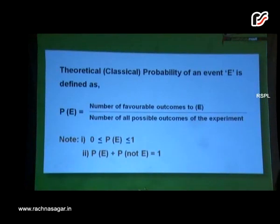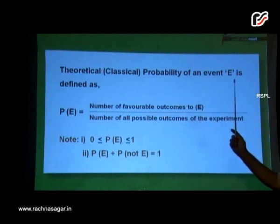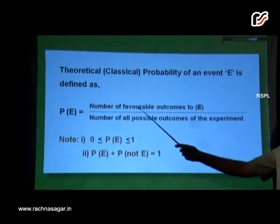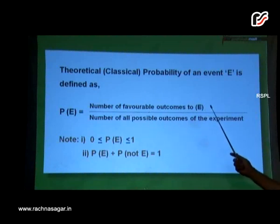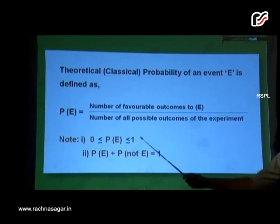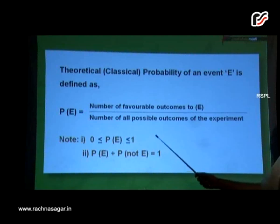The first is theoretical classical probability of an event E, defined as P(E) equals number of favorable outcomes to E divided by number of all possible outcomes of the experiment. And probability of an event always lies between 0 and 1, that is 0 is less than or equal to P(E) less than or equal to 1.